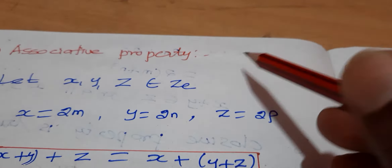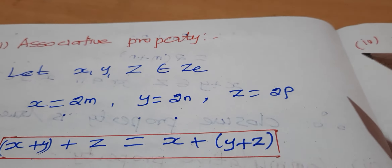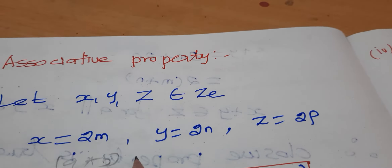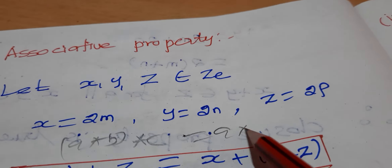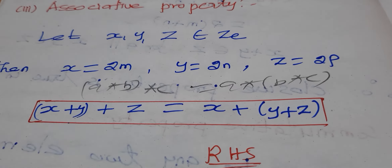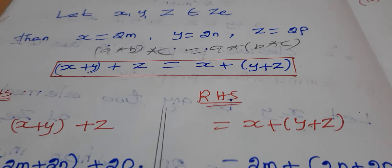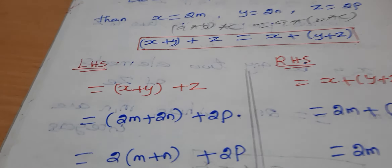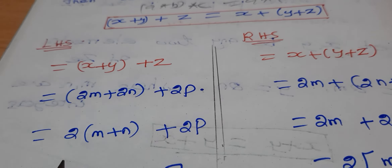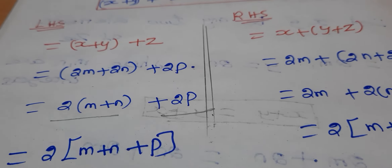Next is the associative property. Here x = 2m, y = 2n, z = 2p. We need to show a star (b star c) = (a star b) star c. Taking the left hand side, with x = 2m, y = 2n, we get 2(m + n + p).